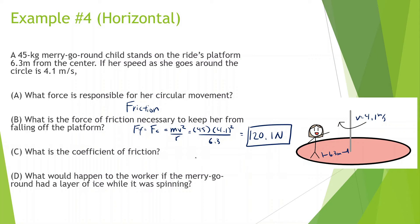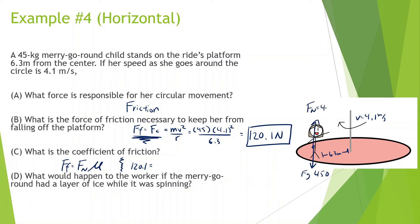What is the coefficient of friction? We know the force of friction equals the normal force times the coefficient of friction. Force of friction is 120.1 N. She weighs 45 kilograms, so her force of gravity is 450 N, and her normal force is also 450 N. So μ = 120.1 divided by 450 = 0.27.